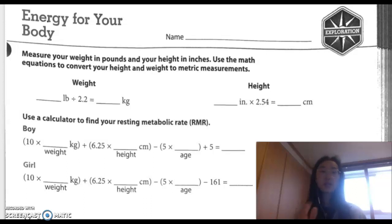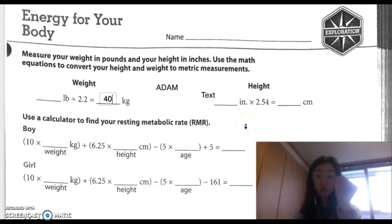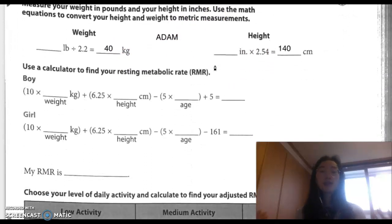So let's go ahead and do this. Make sure you have a calculator as well. Measure your weight in pounds and your height in inches. Use the math equations to convert your height and weight to metric measurements. The good news is that in Korea we already use metric measurements, so you don't have to find out your pounds, you just have to write your kilograms and your centimeters for height. All right, so our imaginary friend's name is going to be Adam. Adam weighs 40 kilograms. Again, you're going to be writing your own weight, not Adam's. And he is 140 centimeters tall.